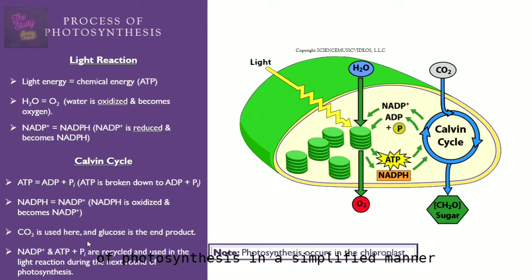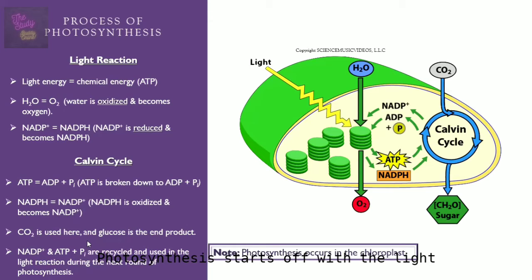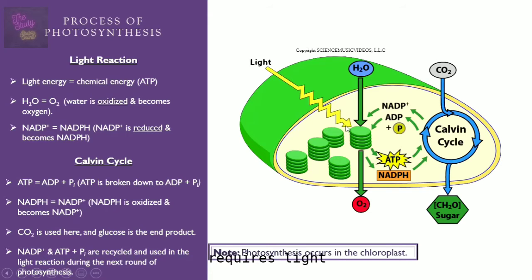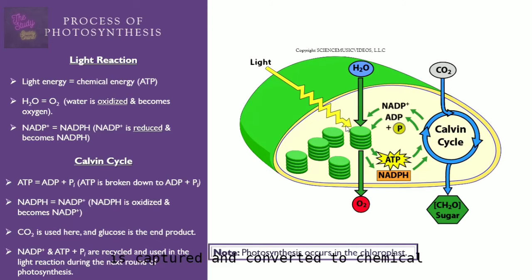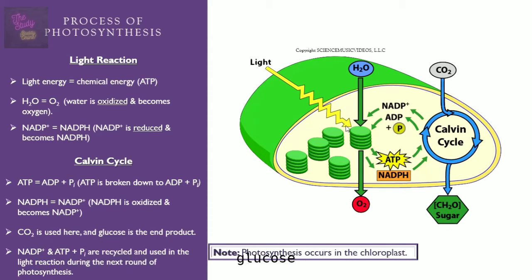I'll briefly touch on the process of photosynthesis, though this video is mainly focused on glycolysis and cellular respiration. Photosynthesis starts off with the light reaction, and as the name implies, this process requires light. During the light reaction, light energy is captured and converted to chemical energy in the form of ATP. The rest of the photosynthetic process uses that ATP to form sugar, which is glucose.